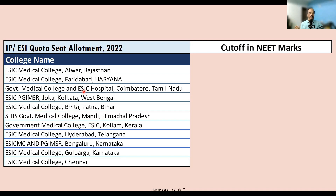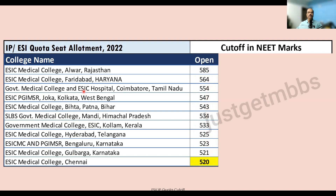Let us see the cutoff in terms of NEET score by category. For the open category, the highest cutoff was 585 marks and the lowest was 520 marks. The highest cutoff was for ESI Medical College Alwar, Rajasthan, which closed at 585. The second highest was ESI Faridabad at 564. The lowest cutoff was for ESI Medical College Chennai at 520 marks — so 520 was the minimum for open category candidates under IP quota.